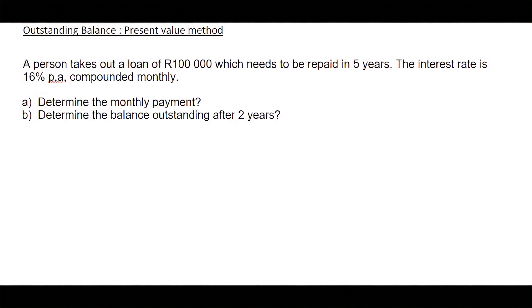In this question, we have a person who takes out a loan that needs to be repaid in five years, and they give us the interest rate. Everything looks good. It's easy. They're not making late payments or anything like that. So question A says, determine the monthly payment.